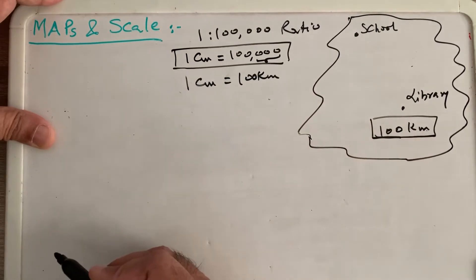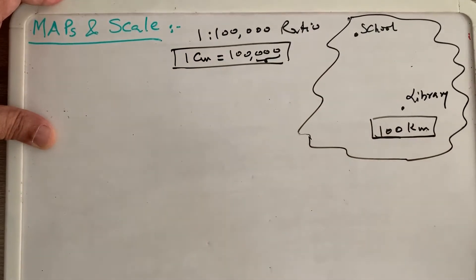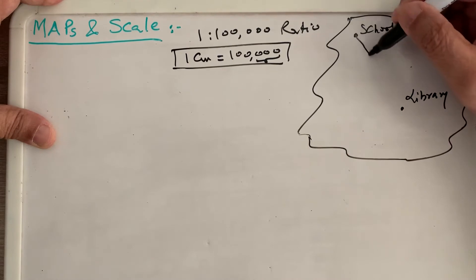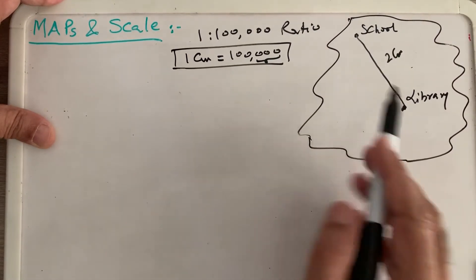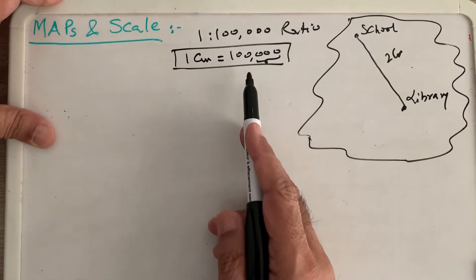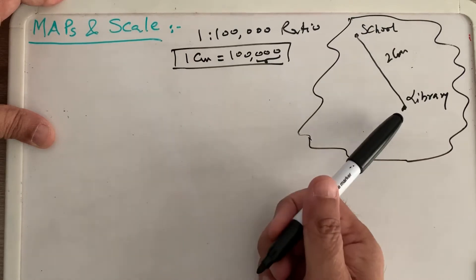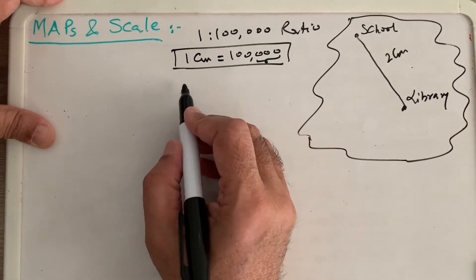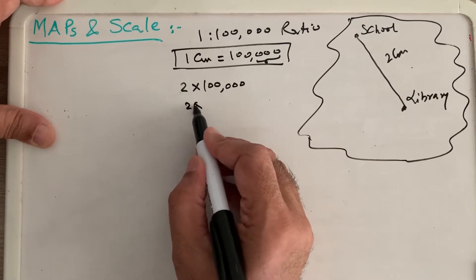Let's take another example. If my school and library are represented on this map as two centimeters, and my scale is 1:200,000 — meaning one centimeter equals 100,000 centimeters — then if we measure two centimeters on the map, the actual distance between the school and library is two times 100,000, which is 200,000 centimeters.